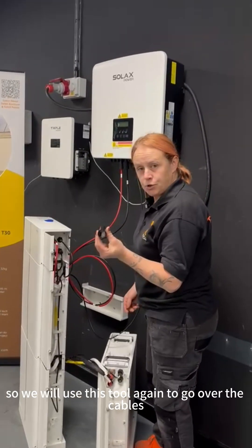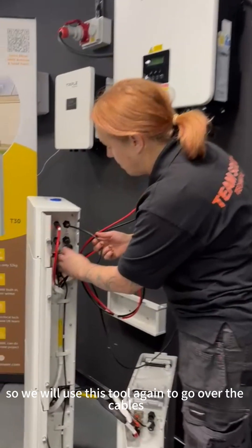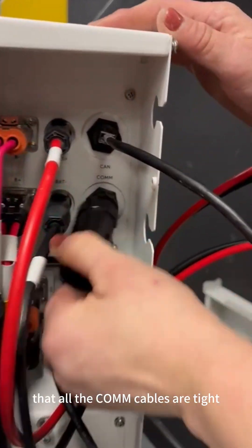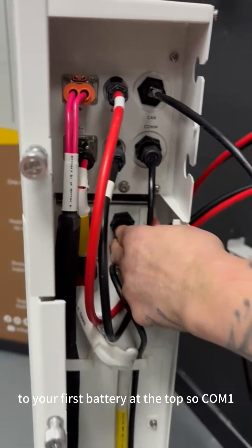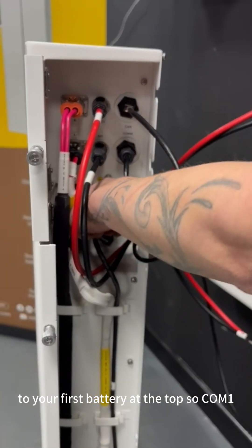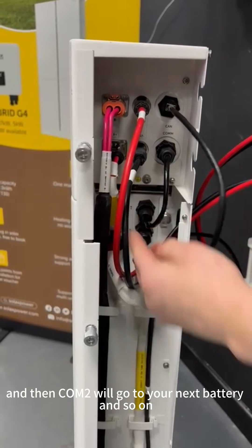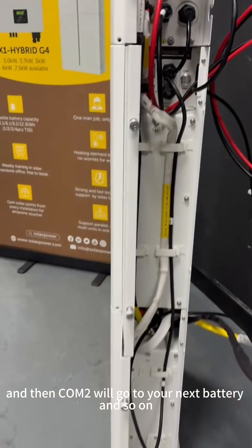Then we can screw the bottom cap back up to make this IP rated. We'll put this end back through the grommet and into the CAN port. As you can see, we heard a click and that is now in nice and tight. We'll use this tool again to go over the cables just to verify that all the comms cables are tight. We've got comms cable from the BMU to your first battery at the top, comm one, and then comm two will go to your next battery and so on.